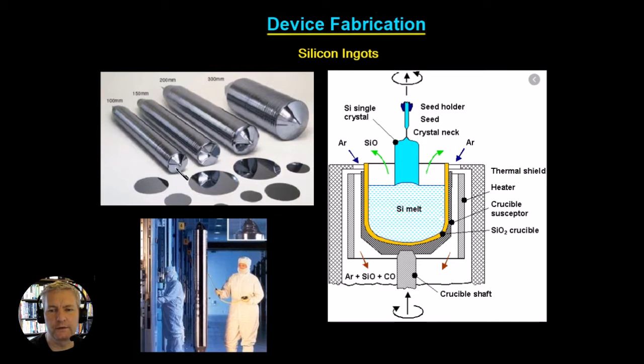We start off with a silicon ingot and these range from 3 inches diameter all the way up to 12 inches in diameter.